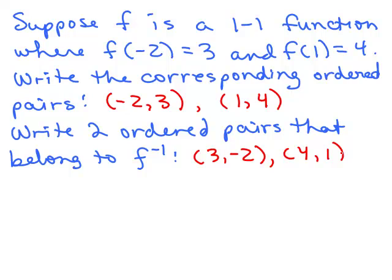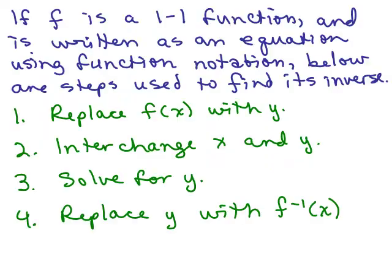Often you're given functions where you aren't listing all the ordered pairs, so we have another way of finding the equation of the inverse of a one-to-one function. Below are the steps: one, replace f(x) with y; two, interchange x and y; three, solve for y; and four, replace y with f inverse of x.